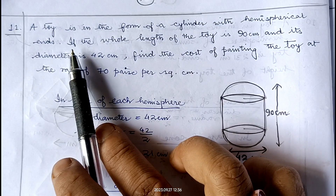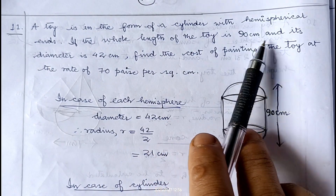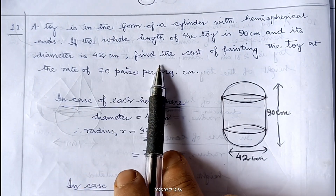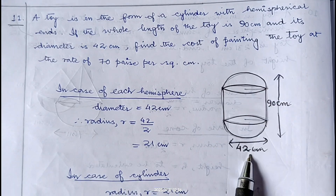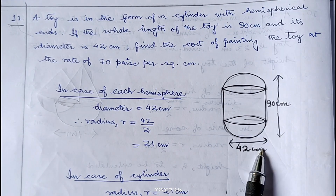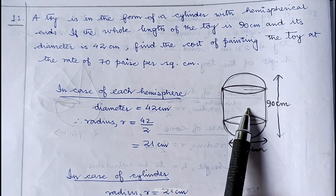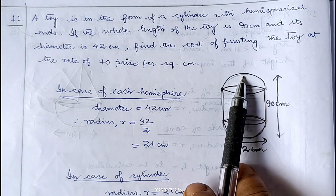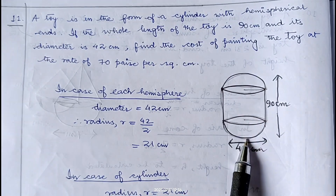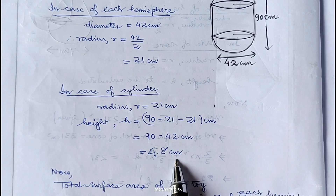In question number 11, a toy is in the form of a cylinder with hemispherical ends. If the whole length of the toy is 90 centimeter and its diameter is 42 centimeter, find the cost of painting the toy at the rate of 70 paisa per square centimeter. Each hemisphere has diameter 42, so radius is 21 centimeter. The cylindrical part also has radius 21 centimeter, and height of cylinder is 90 minus 21 minus 21, which is 48 centimeter.